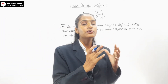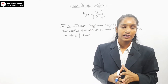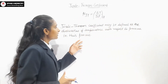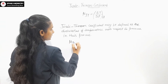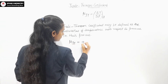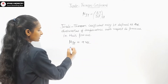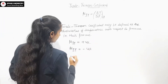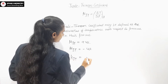μJT can be positive, negative, or zero. When will the value be positive? First case: μJT is positive. Second case: μJT is negative. Third case: μJT is zero.